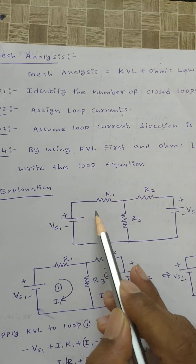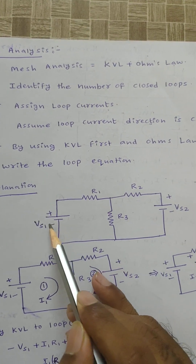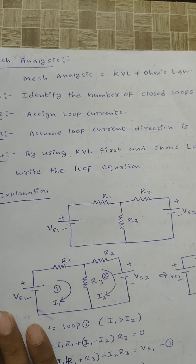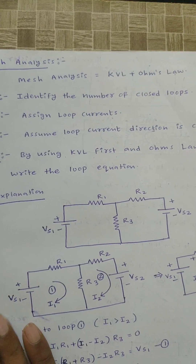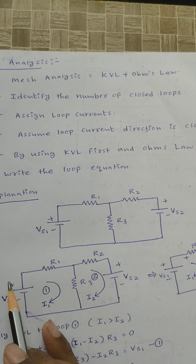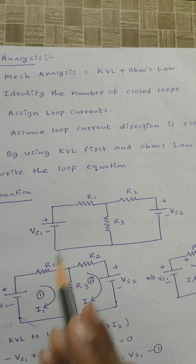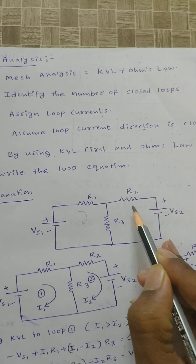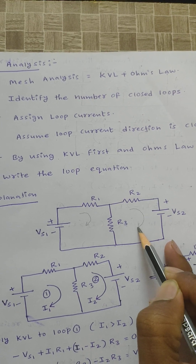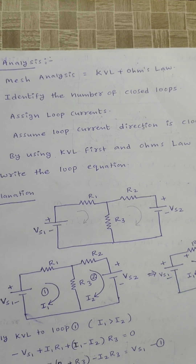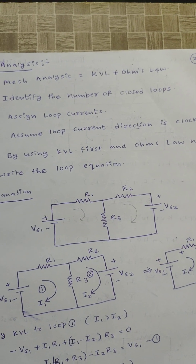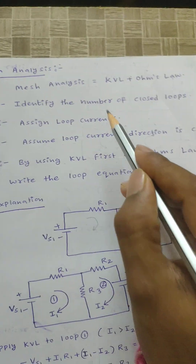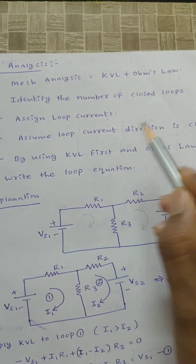To understand this analysis, let us consider a circuit. This circuit has two voltage sources and three resistors. Step one: identify the number of closed paths. This is one closed path, and this is another closed path, so there are two closed paths. Now assign loop currents and assume loop current directions.